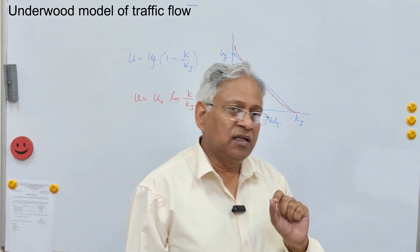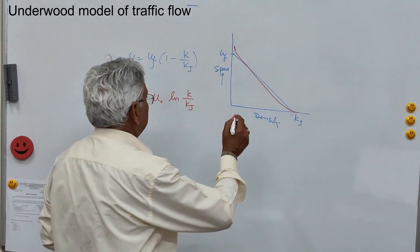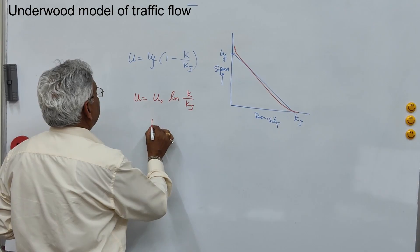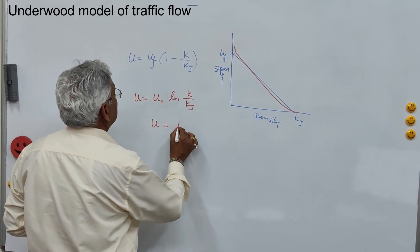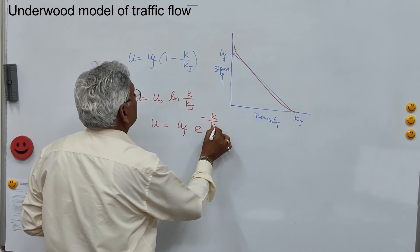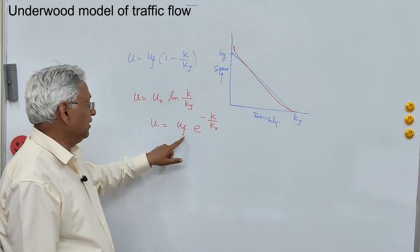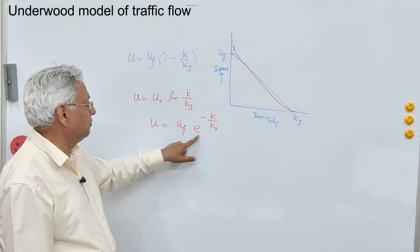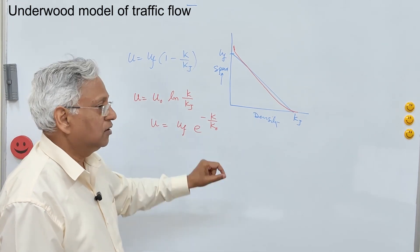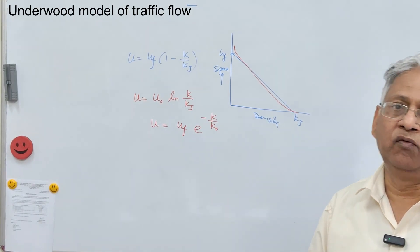To further improve the Greenberg model, in 1961 Underwood suggested an exponential relationship between speed and density. The speed is given by: u equals uf times e to the power minus k upon k0. Here k0 is the optimum density — the density at maximum flow.